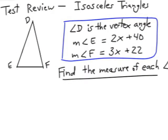This problem involves solving an isosceles triangle. Angle D is the vertex angle and angle E and angle F are measured, as you can see, in algebraic terms. Find the measure of each angle.